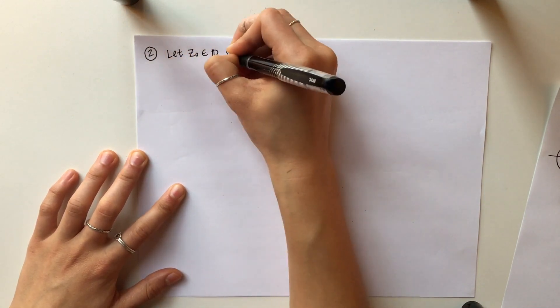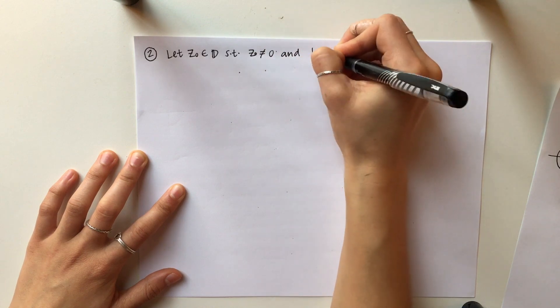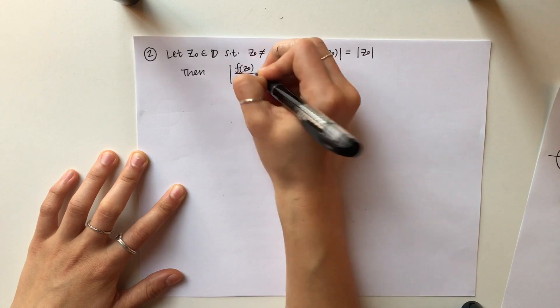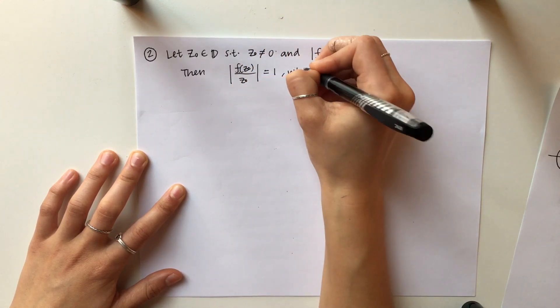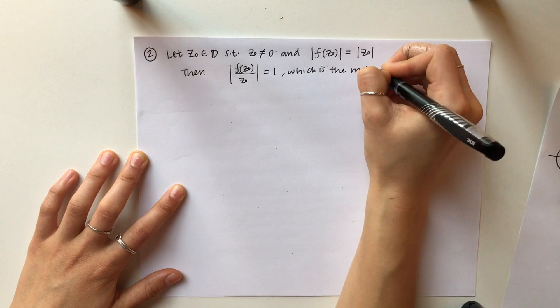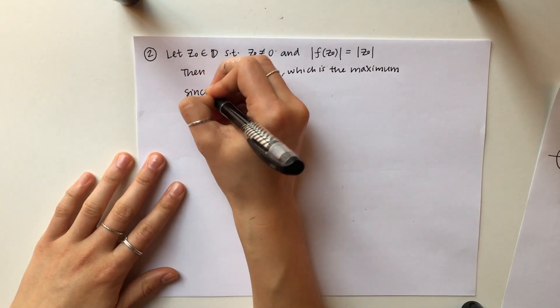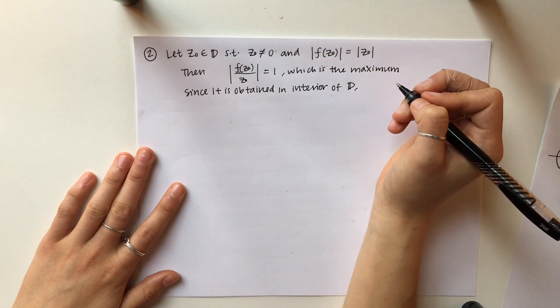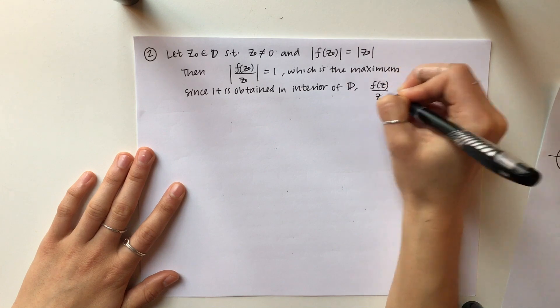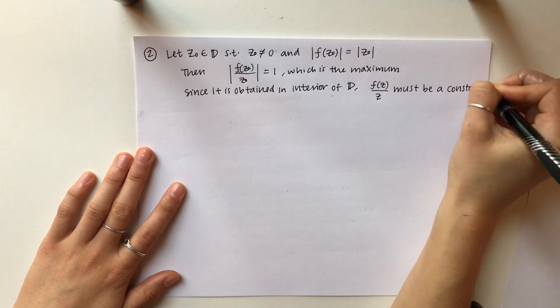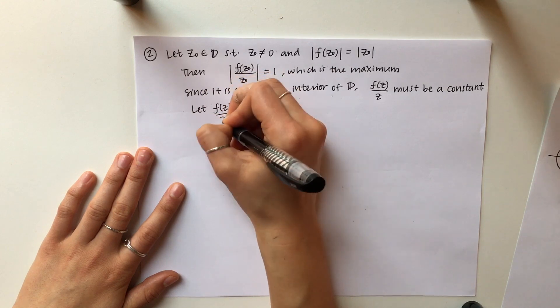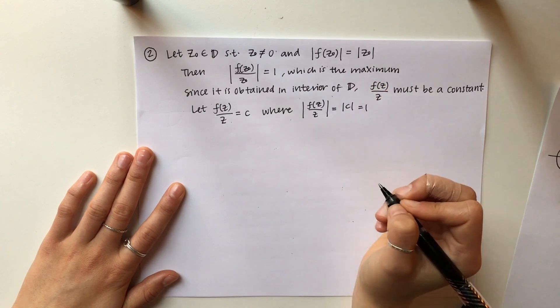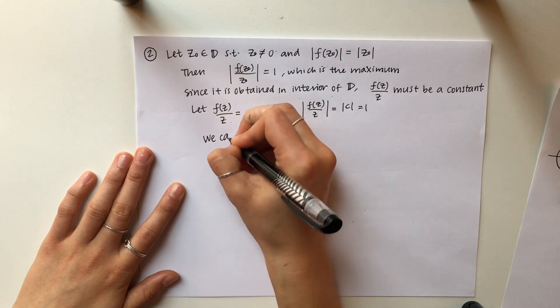Moving on, we will prove the second part. In the second part, we let Z naught be an element of D such that we have equality between F of Z naught and Z naught. Then we can just divide both sides by Z naught, and we have that that must equal 1, which is the maximum, because any maximum obtained has to be 1 since we're working inside the unit disk. And since it's obtained in the interior, since Z naught is in the interior of D, the maximum modulus principle says that the maximum can only be obtained on the boundary, and if it's not, then that function must be a constant. And so F of Z over Z must be a constant, we'll name it C, where the modulus of C equals 1.